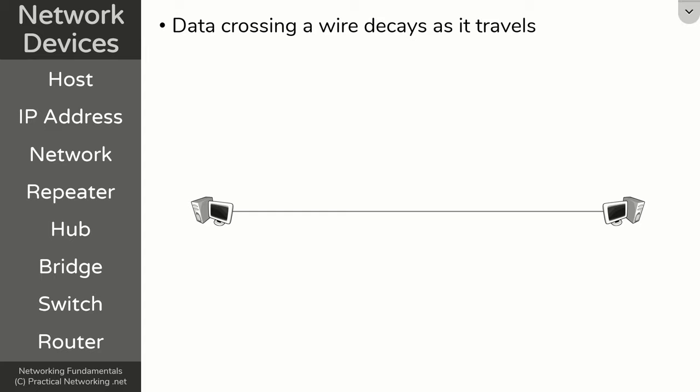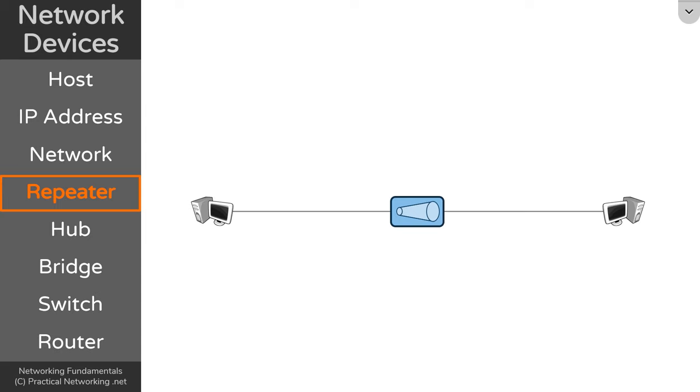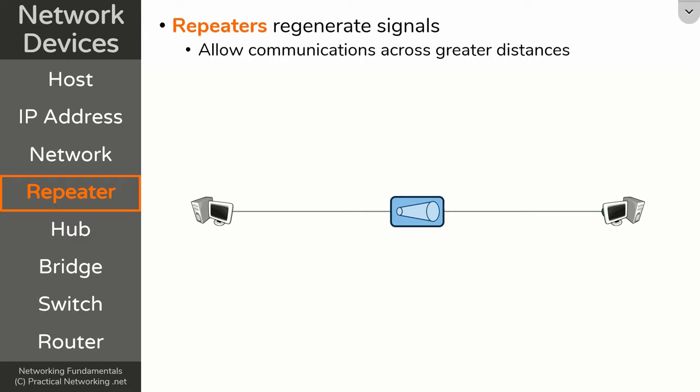However, if these hosts span greater distances — maybe you're connecting two computers on opposite sides of a building, or even in two different buildings — then you might have a problem. If the signal decays before it gets to the other side, then these two hosts cannot share data. In those cases, what you need is a repeater. A repeater is a device whose sole purpose is to regenerate signals. Anything that comes in on one end simply gets regenerated out the other side, allowing you to connect devices together which span greater distances.